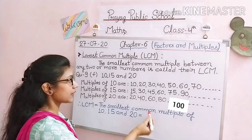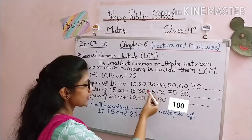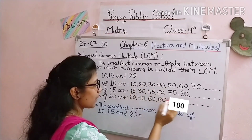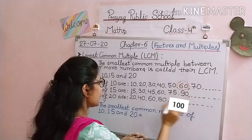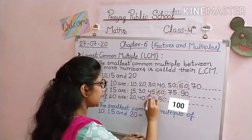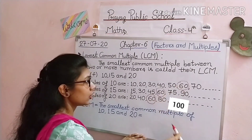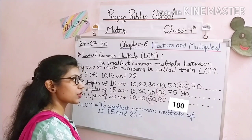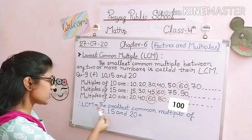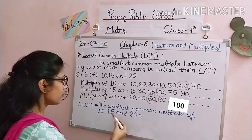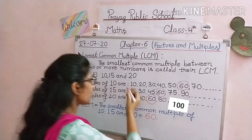Now we check which number is common in all three series. 10 is not common in all three, nor is 15 or 20. Checking each number, we find that 60 is a multiple of 10, a multiple of 15, and also a multiple of 20. Since only one number is common across all three, there is no need to find the lowest among them. Therefore, the LCM of 10, 15, and 20 is 60.